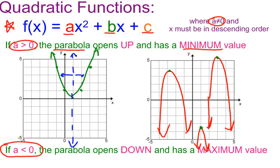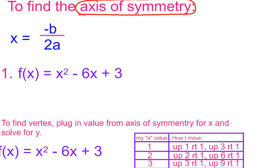It's called the axis of symmetry because it's symmetrical on both sides. If you fold your paper on that line, both sides of the parabola would be touching. The points on either side are called reflection points — equidistant from each other. The vertex sits on that line, and my axis of symmetry is the line that cuts the parabola in half.